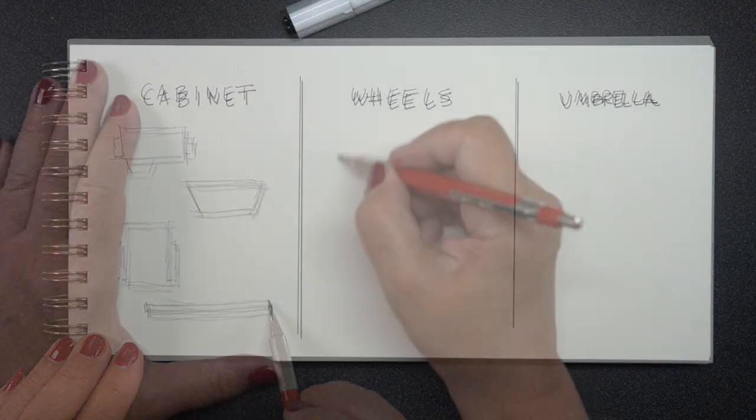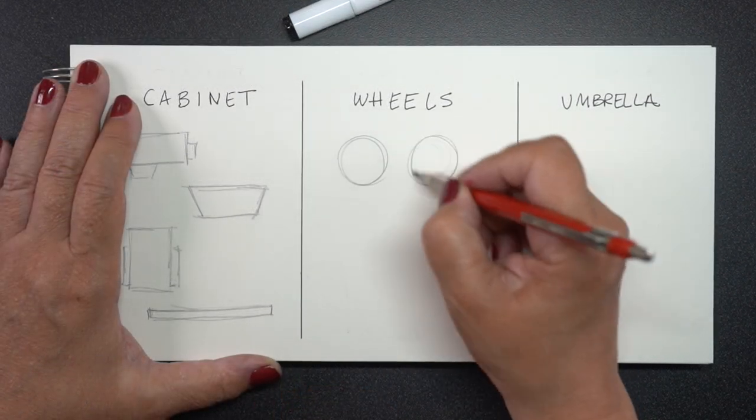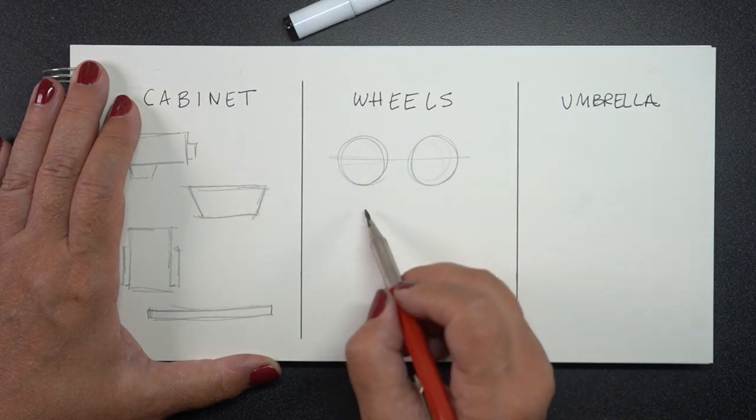You could even do a wagon style thing with just a platform with wheels on it and then put something else in it.